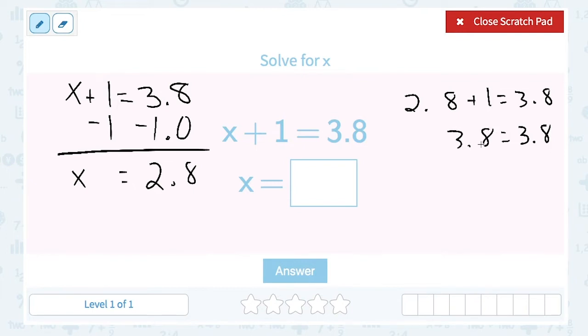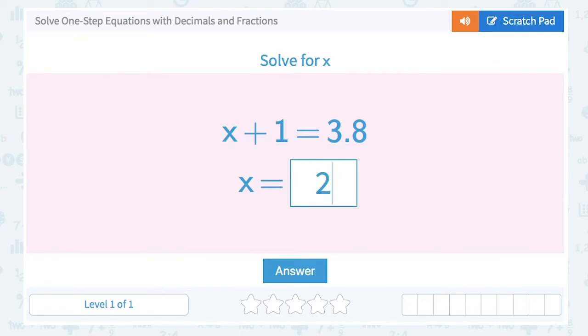2.8 plus 1 is in fact 3.8, so everything balances out. 3.8 equals 3.8. I can put a check mark to say it checked out. Remember that answer was 2.8, so let's go back and put 2.8 in as our answer.